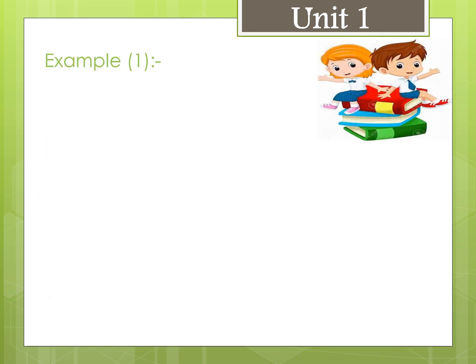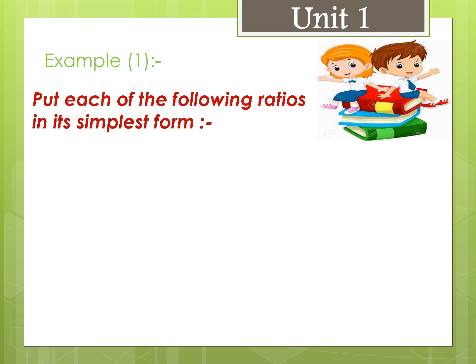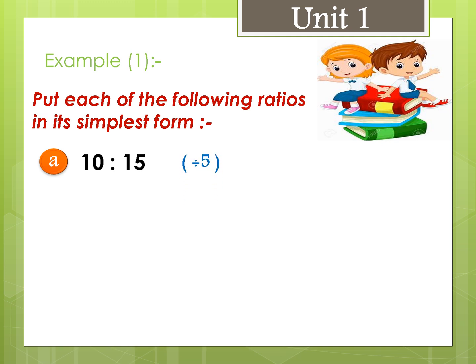Example number 1: Put each of the following ratios in its simplest form. Letter a: 10 to 15. Since 10 and 15 are both divisible by 5, we divide: 10 divided by 5 equals 2, and 15 divided by 5 equals 3. The ratio is 2 to 3.